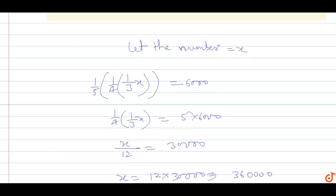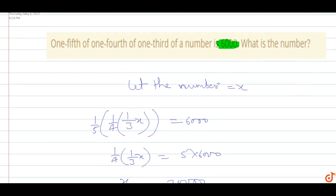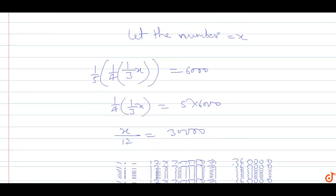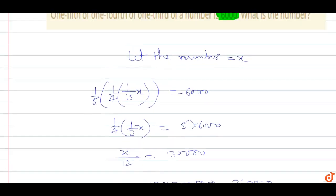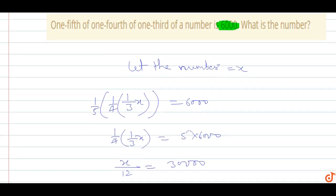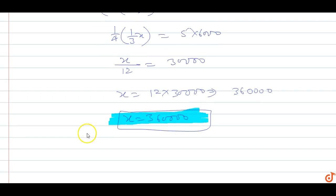The number three lakhs sixty thousand means one-fifth of one-fourth of one-third of three lakhs sixty thousand equals six thousand. So this is the answer for this question.